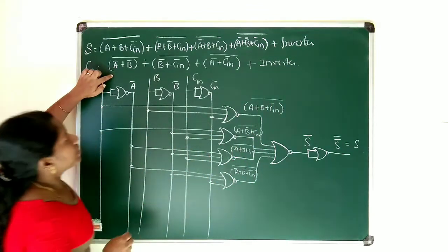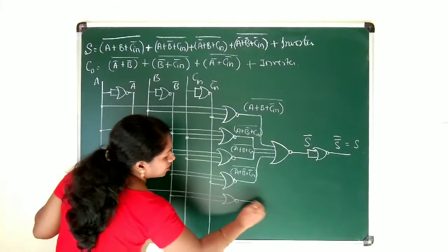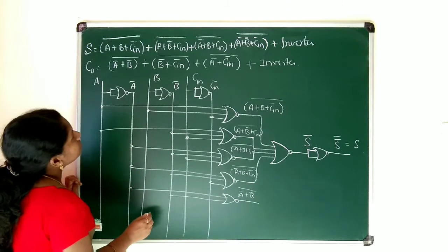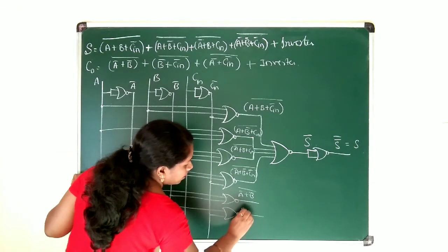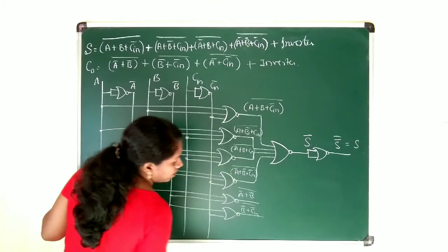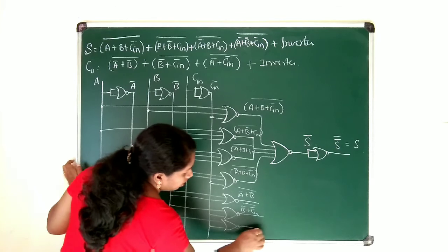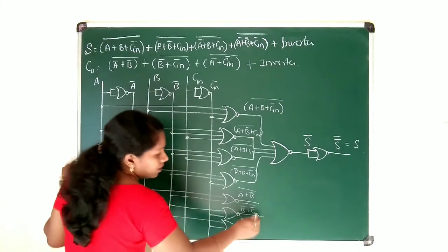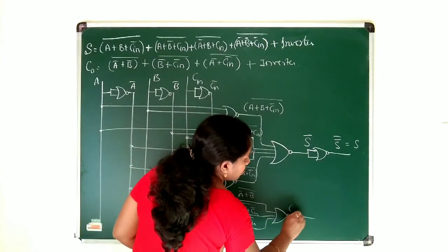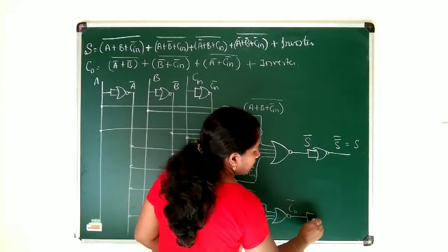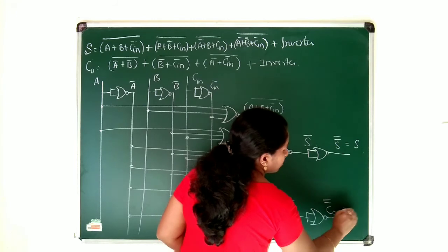Now I will write the C-naught. C-naught is equal to A bar plus B bar, whole complement. A bar, B bar — whole complement — that is a NOR gate. A bar plus B bar, whole complement. And then next is B bar plus C-in bar — B bar, C-in bar — so here you will be getting B bar plus C-in bar, whole bar. And next A bar plus C-in bar — A bar is here, tap it, and C-in bar is here — connect a NOR gate: A bar plus C-in bar. Now, all these three outputs of the NOR gate will be given to again a NOR gate, which will be giving you C-naught complement. I need to remove this complement, so I will be using one more inverter — that is, by using a shorted end of NOR gate — which will be giving you C-naught double bar, that is equal to C-naught.